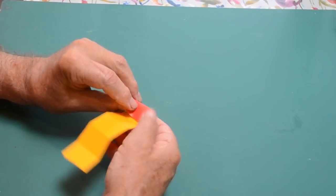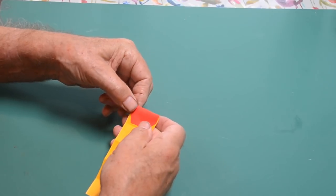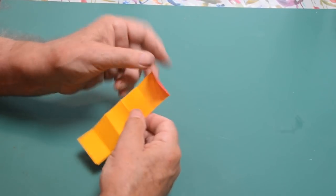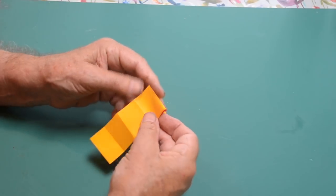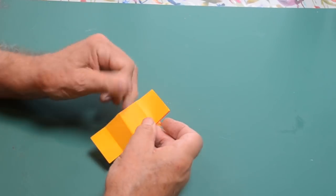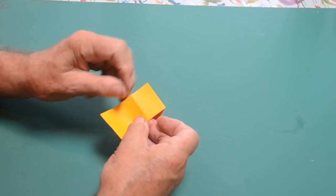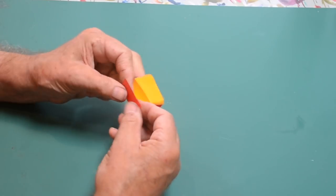Then make the top fold there a valley fold. The second one a mountain fold. The third one again a mountain fold. The fourth one again a mountain fold. And the final one a valley fold.